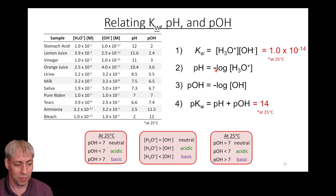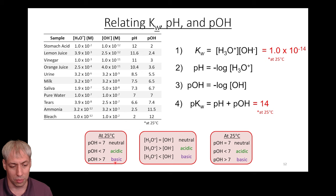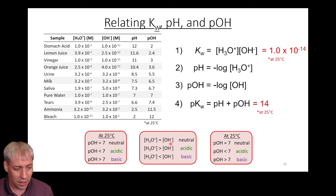To summarize the descriptors: pOH = 7 means neutral; pOH less than 7 is acidic; pOH greater than 7 is basic. Looking at concentrations directly: if H3O⁺ and OH⁻ are equal, the solution is neutral; if H3O⁺ is greater, it's acidic; if OH⁻ is greater, it's basic.